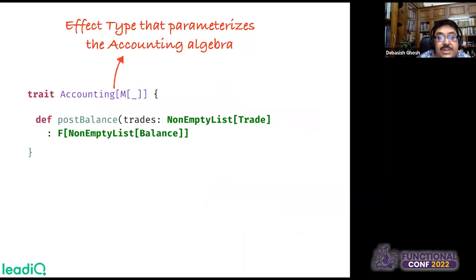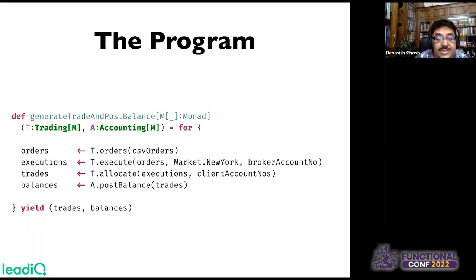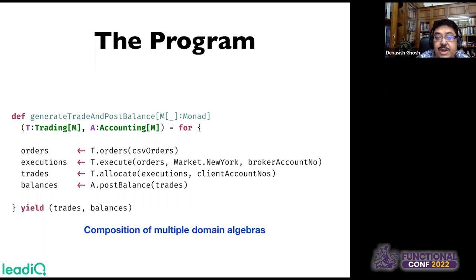Here is an example of one more algebra with the same effect type M that does accounting. At the end of the trading process, if we want to post balances to client accounts, we can directly plug in this algebra. We injected the algebra as part of the function signature and could directly use the postBalance functions, because they are all chained together using the same effect type and algebra. From generating trades to generating trades and balances is just a minuscule, intuitive change — another example of composition of multiple domain algebras.